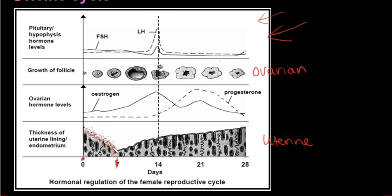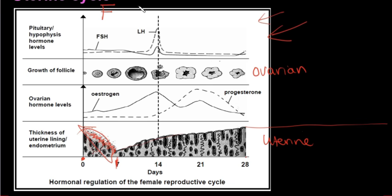If fertilization has not occurred, the endometrial lining breaks down and menstruation occurs — all the blood, mucus, and tissue built up in the endometrium are shed in the menstrual blood that leaves through the cervix and vagina. If fertilization is successful, the endometrial lining carries on for nine months. A helpful mnemonic is FOLP: F for FSH, O for estrogen, L for LH, and P for progesterone — this is the order in which the hormones are secreted.